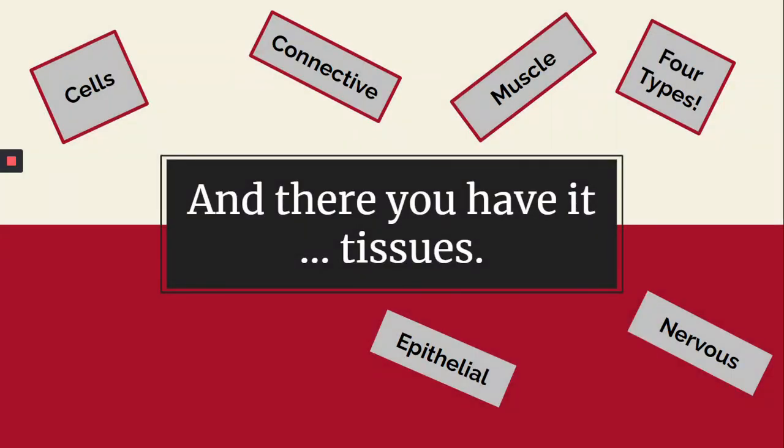And there you have it — tissues. Cells grouping together making tissues, four types: connective, muscular, epithelial, nervous. Lots of great information, lots of content. Super exciting — I'll have fun today.